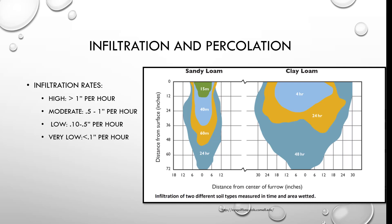Clay loam is going to be very slow. The problem with having very slow or low infiltration rates — if you're using irrigation and running it beyond the time it takes to infiltrate the soil, you're going to be wasting water and causing erosion.